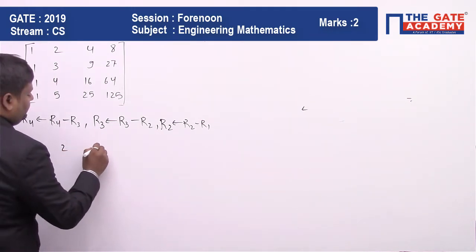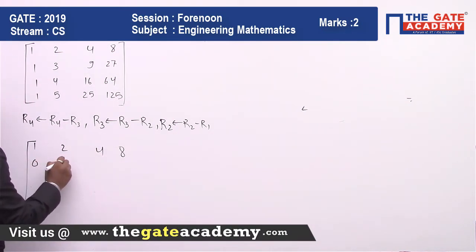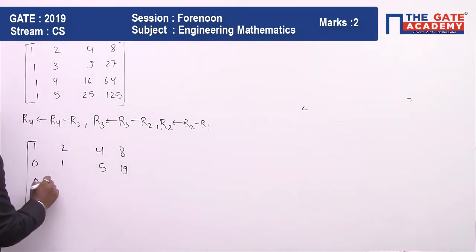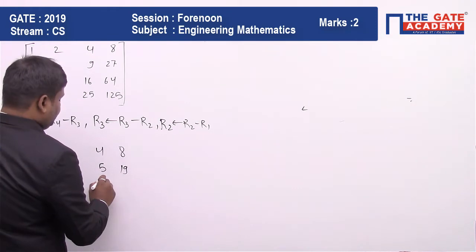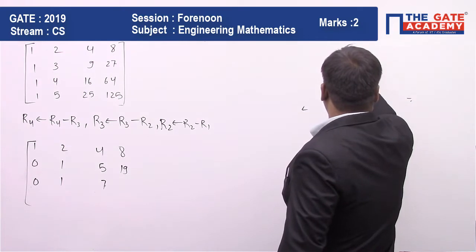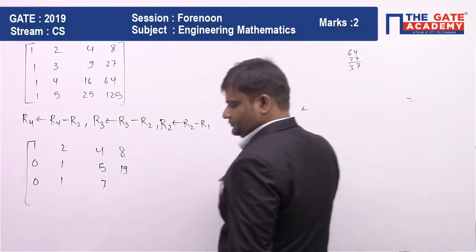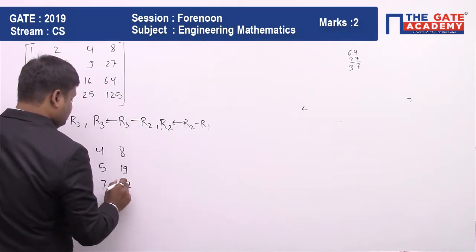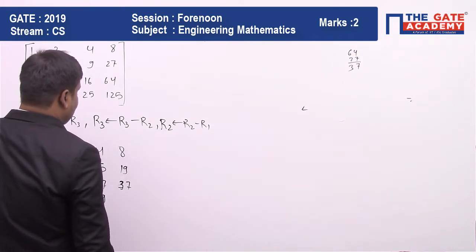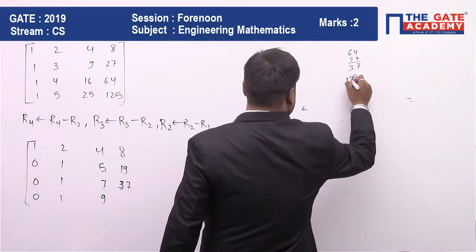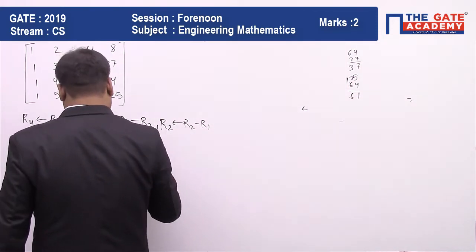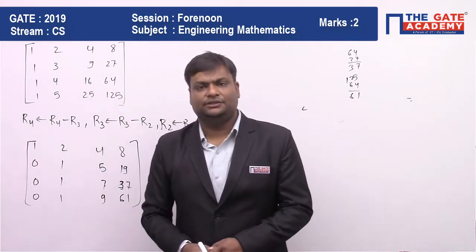This will be 1, 2, 4, 8; then 0, 1, 5, 19; then 0, 1, 7 (16 minus 9), and 37 (64 minus 27). The last row is 0, 1, 16 (25 minus 9), and 125 minus 64 equals 61. So this is our new matrix.